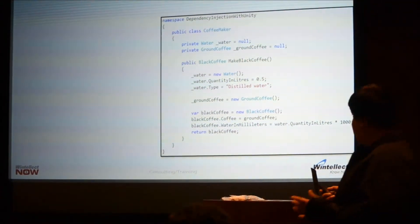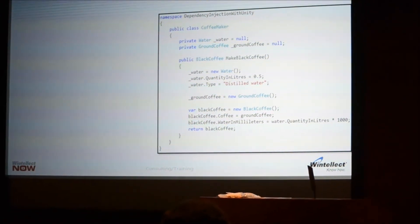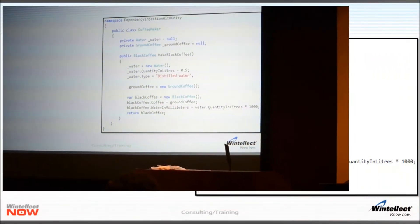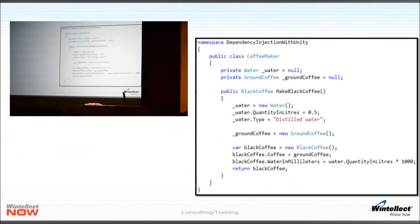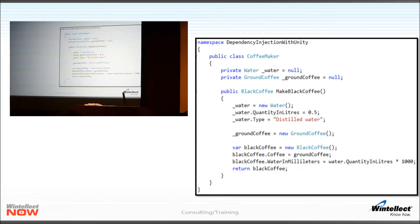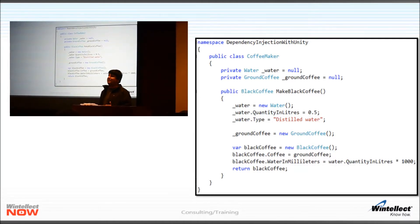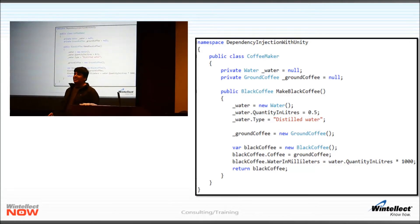The code for that might look something like this. You have a coffee maker class. The coffee maker class needs water and some ground coffee. And there's a method called make black coffee that uses the water and the ground coffee to make some black coffee. To the untrained mind, this code might look like there's nothing wrong with it. And at some level that is true. To be honest, this does the job. So there's nothing wrong with this code.